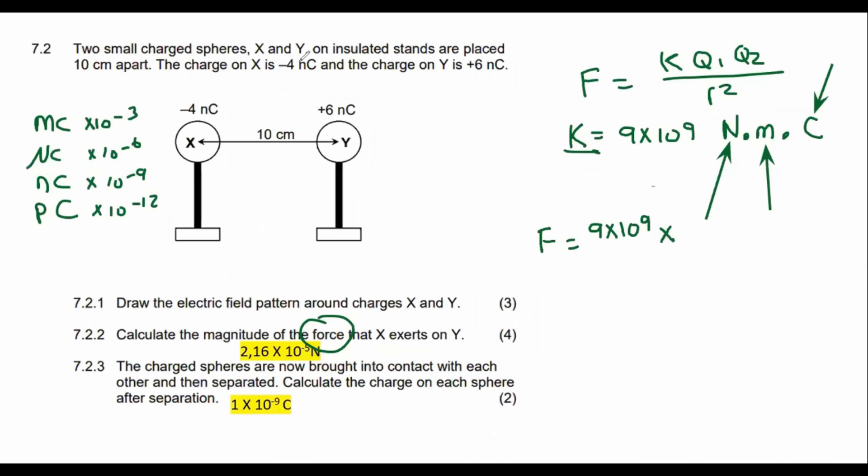So let's go fill our formula in now. We're going to say 9 times 10 to the 9 multiplied. Now, this one is 4. Please do not put the negative on the calculator. That is not correct. So that's going to be 4 times 10 to the minus 9 because it's got a nanocoulomb. And then this one is 6 times 10 to the minus 9. And then at the bottom, we have the distance. Now, be careful. This is in centimeters. It needs to be in meters. To convert from centimeters to meters, you are going to divide with 100. So that would give us 0.1 squared. And if we had to go work this out, we should end up with 2.116 times 10 to the power of negative 5 newtons.